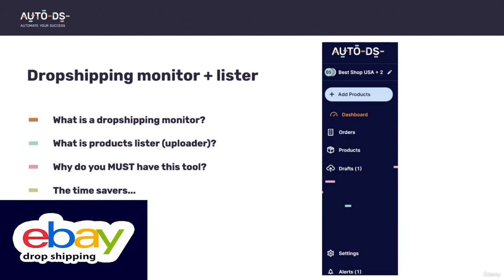Let's say we sell from AliExpress and we listed a mouse for $100. If the price increases to $110 and someone buys it at your old price, you'll lose money. What a monitor does is automatically update the price when the supplier's price changes — both up and down. Regarding stock, if the product goes out of stock on AliExpress, it will mark it as out of stock in your eBay store too.